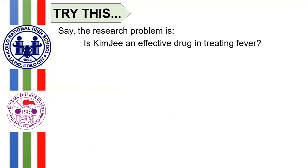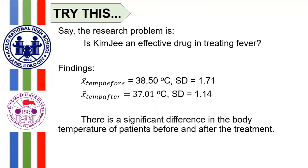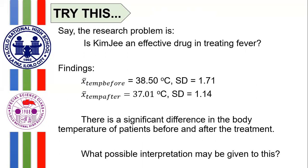For the last example: is KIMG an effective drug in treating fever? Suppose participants before treatment had a mean temperature of 38.50 degrees Celsius with a standard deviation of 1.71. After taking the KIMG drug for 24 hours, the mean temperature is now 37.01 degrees Celsius with a standard deviation of 1.14. The results revealed that there is a significant difference in the body temperature of patients before and after the treatment. So what possible interpretation may be given to this?